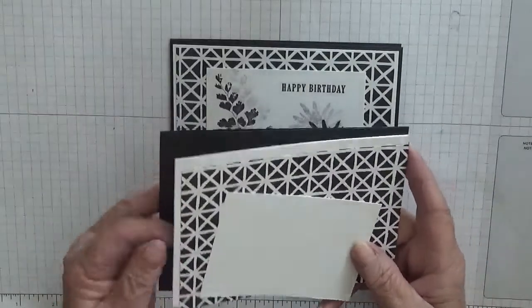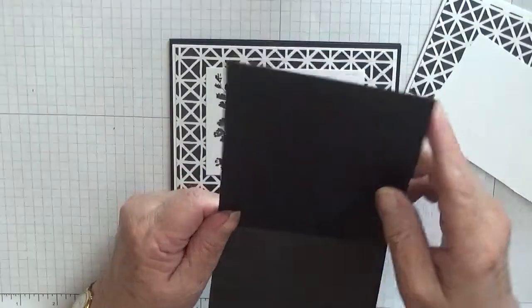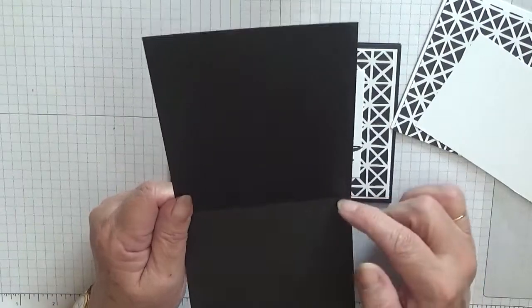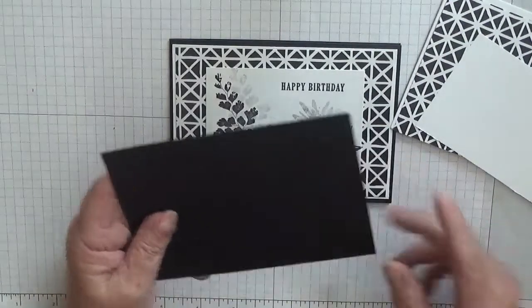For cardstock, I've got a piece of card of eleven and three-quarters by four and one-eighth, scored at five and seven-eighths, folded in half and I've burnished it.